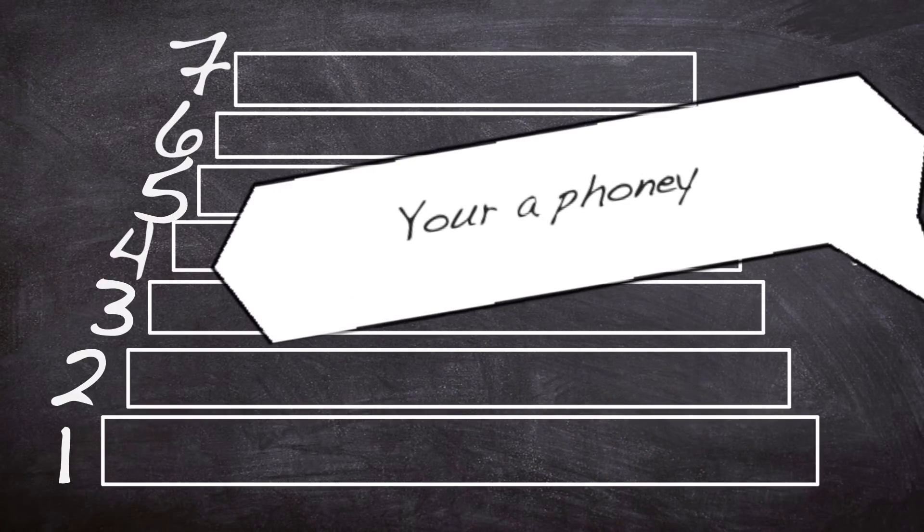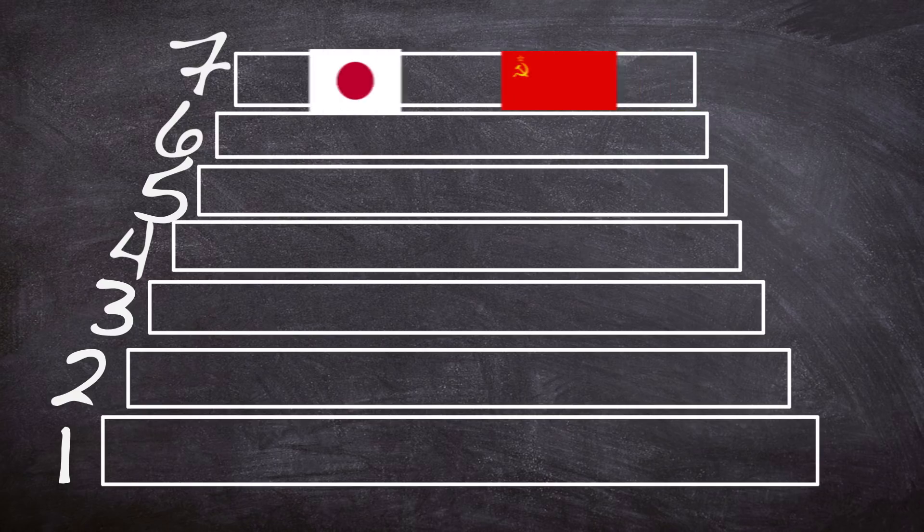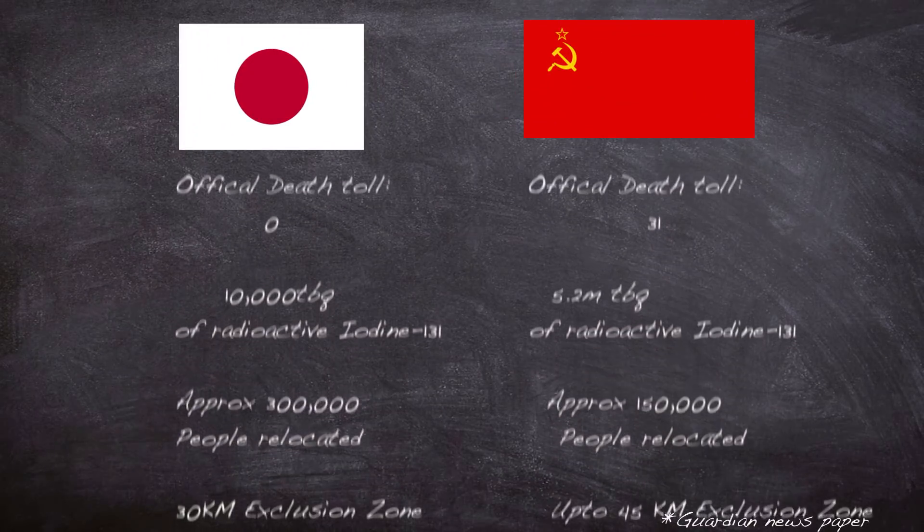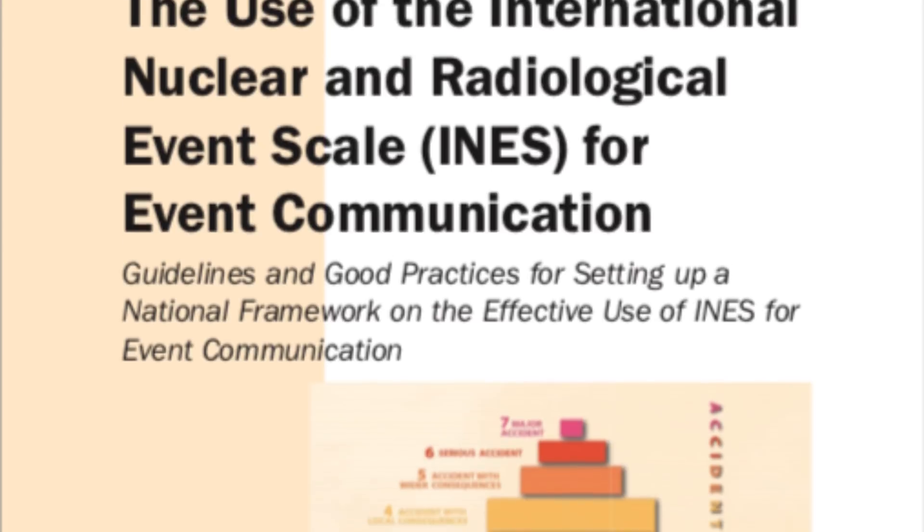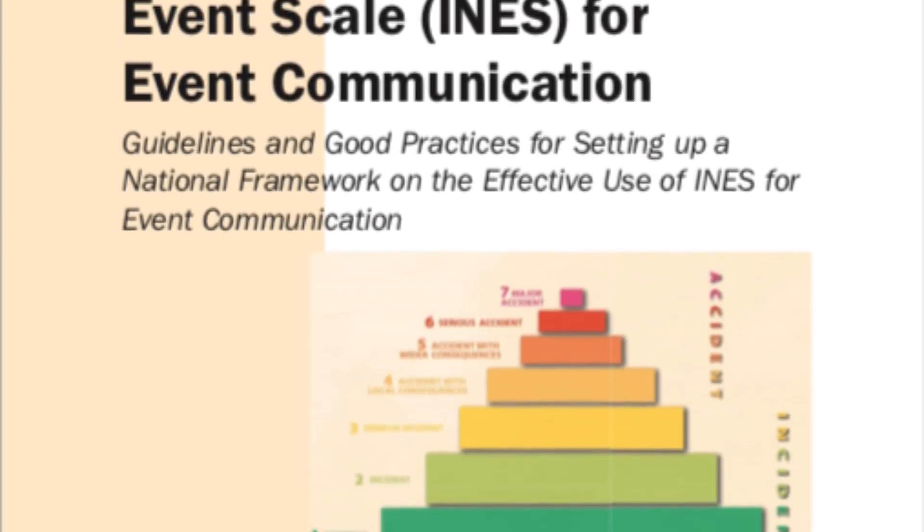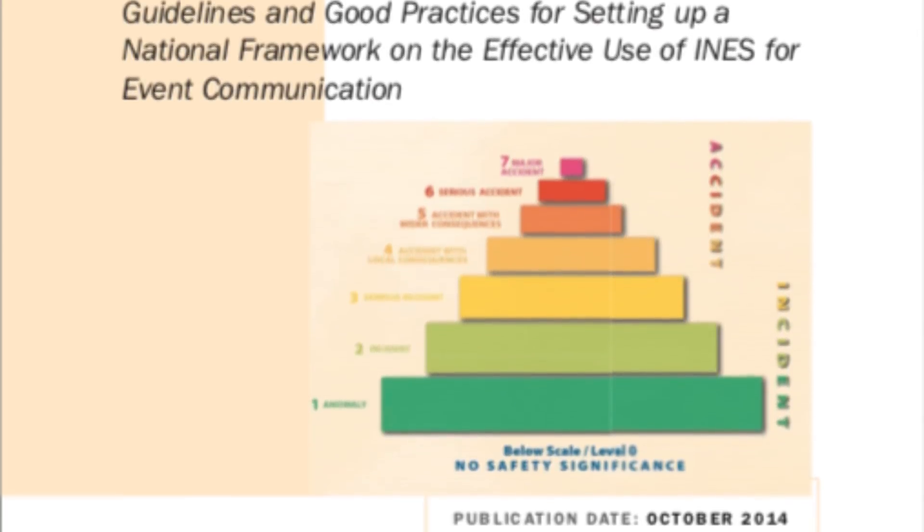Now the scale isn't without criticism mainly from the two accidents in level 7, Chernobyl and Fukushima. As both events were very serious but had very different implications for the wider environment. The scale is mainly used as an easy to use guide for the public so isn't very scientific. Which is its biggest criticism.